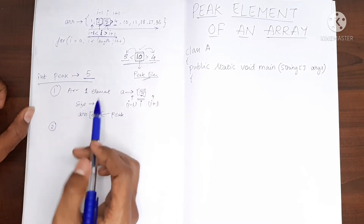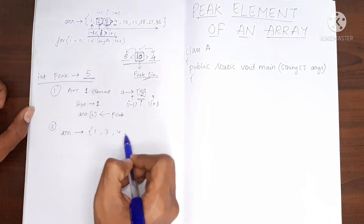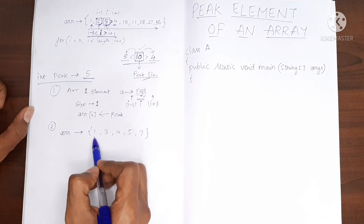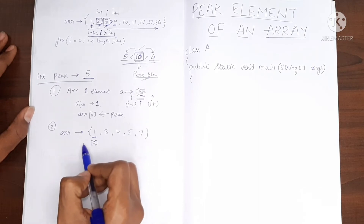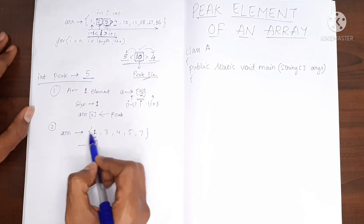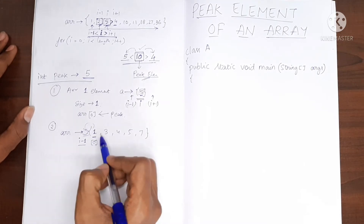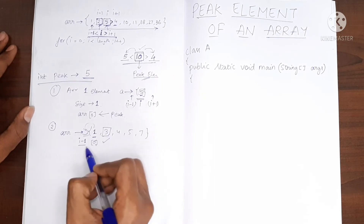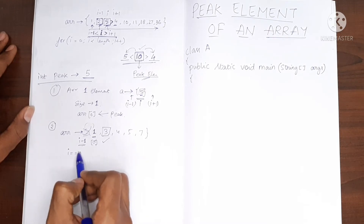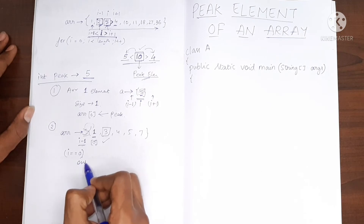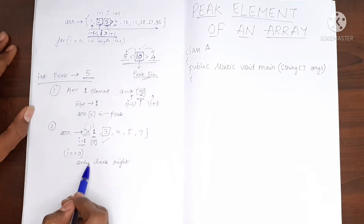Case number 2: what about the value present at index number 0? This is the first element, so it does not have a left neighbor. We cannot check for the value at i-1, but it does have a right neighbor. So when the index is 0, we only check for the right neighbor. This is case number 2.